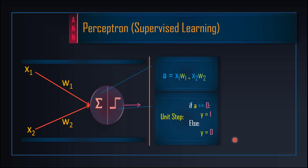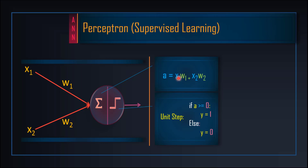Perceptron learning میں چار steps ہیں جنہیں باری باری دیکھتے ہیں۔ Step 1 میں x1 کو w1 سے اور x2 کو w2 سے multiply کر کے add کریں گے — یہاں activation level آ جائے گا۔ Step 2 میں activation function apply ہوتا ہے — جو کہ unit step یا hard limit function ہے — اگر activation a ≥ 0 تو output y = 1، ورنہ y = 0۔